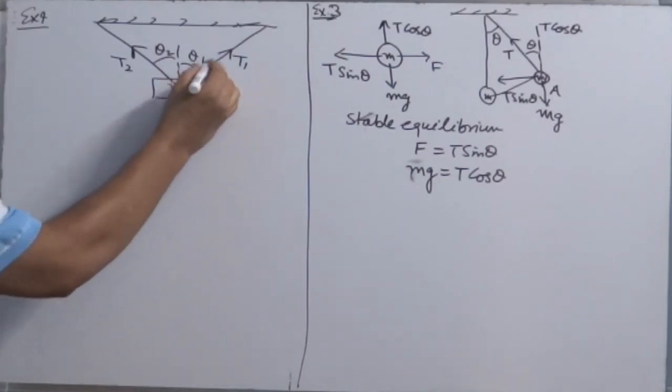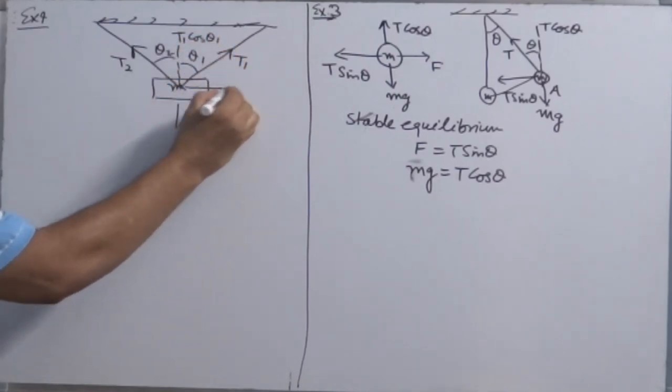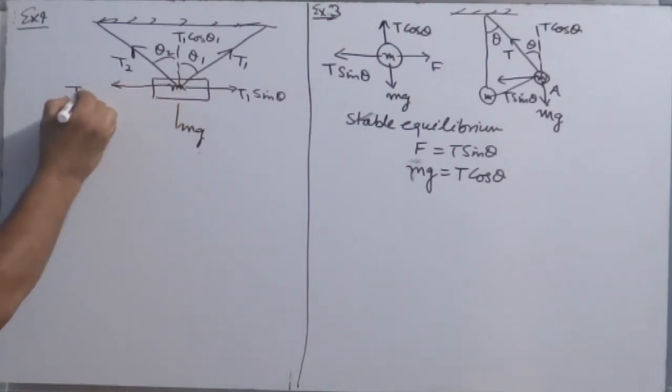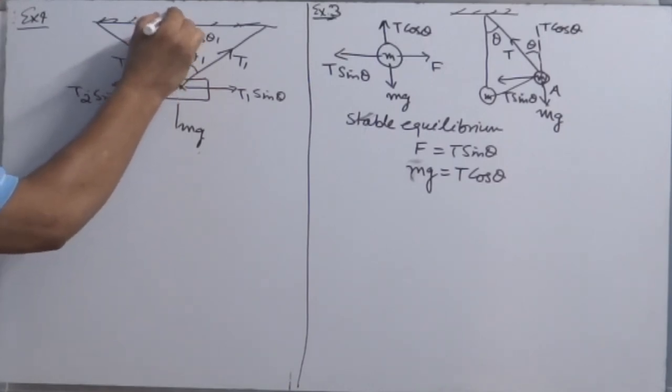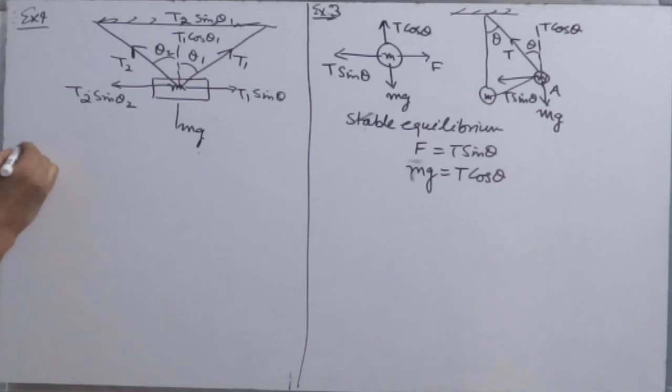So you can resolve this into two component T1 cos theta 1, T1 sin theta 1, T2 sin theta 2, and this side will another component T2 cos theta 2. So for stable equilibrium.